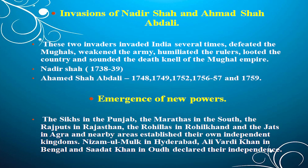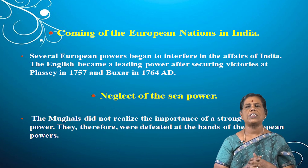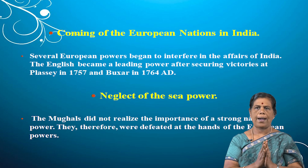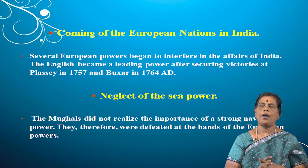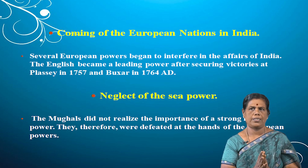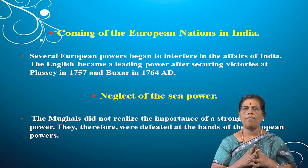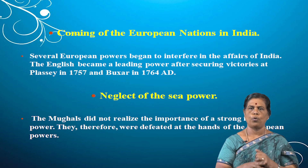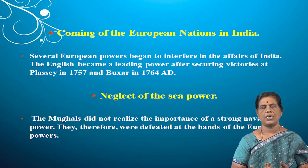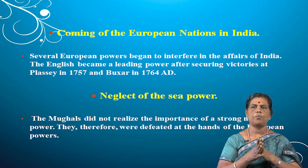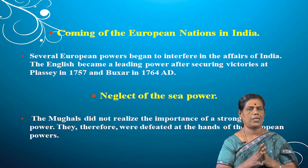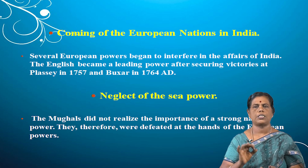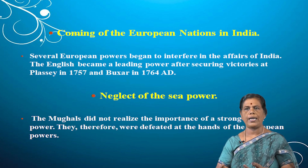The coming of European nations to India was another important reason. As already mentioned, in the court of Jahangir two English captains came and got concessions. Following that, many European countries — the Portuguese, Dutch, Danes, French, and English — began to interfere in the affairs of India. Among these five powers, the English became the leading power after securing victories in the Battle of Plassey in 1757 and the Battle of Buxar in 1764, achieving the conquest of Bengal.